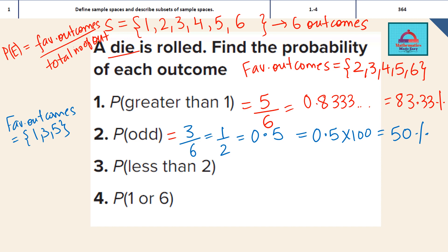Next is probability of less than 1. This is pretty simple — less than 1 means there is only one option: the number 1 itself. Wait, actually there are no whole numbers less than 1 on a die, so the probability is 1 over 6. Convert to decimal: 0.1666 recurring. Multiply by 100 for percentage: 16.66%, which is again a recurring decimal.